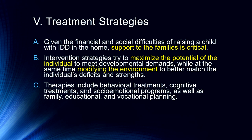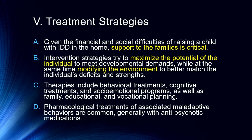Therapies will include behavioral and cognitive treatments and socio-emotional programs, as well as family educational and vocational planning. There are lots of vocational opportunities for individuals with intellectual development disorder to work in the community and live in group homes. Occupational therapists, recreational therapists, vocational therapists, and music therapists are all part of the treatment team. Some pharmacological treatments tend to be associated with violent outbursts or maladaptive behaviors — generally anti-epileptic or anti-psychotic medications — and there is some controversy about that, but they are part of the treatment plan on occasion.